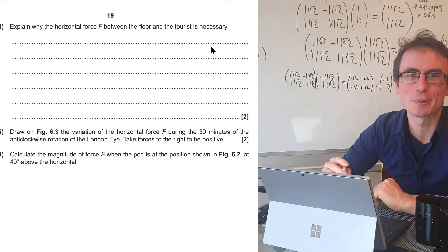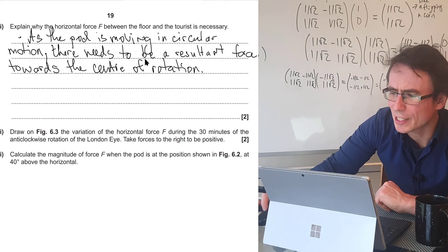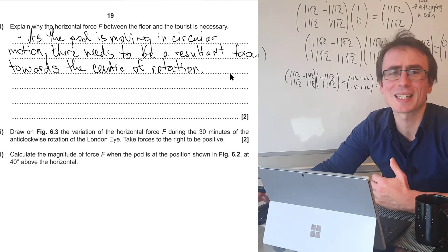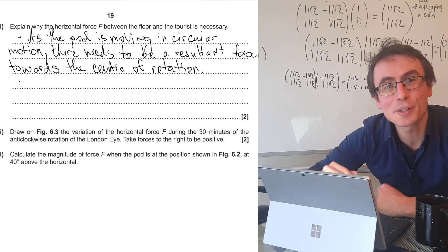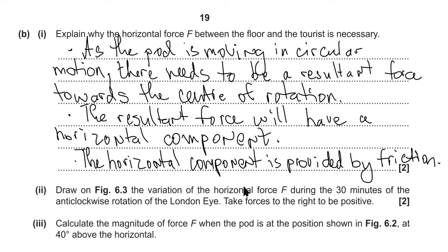Let's put this explanation into words. First mark, as the pod is moving in circular motion, there needs to be a resultant force towards the center of rotation. That resultant force will have a horizontal component, and that horizontal component can only be provided by friction.